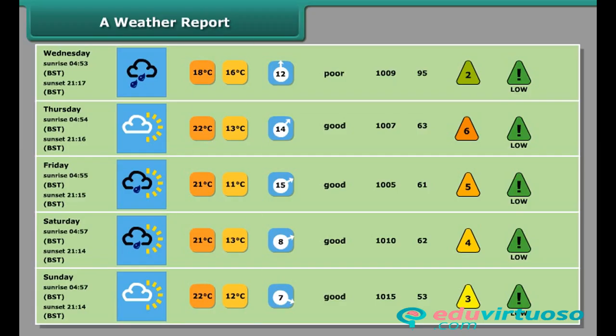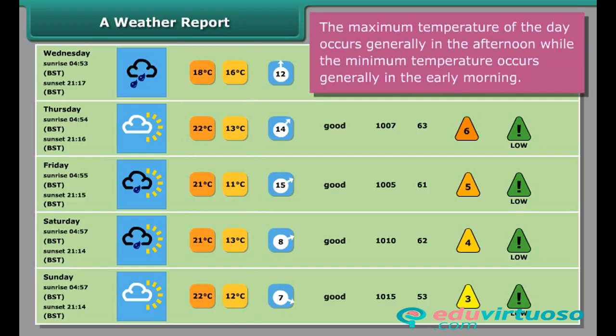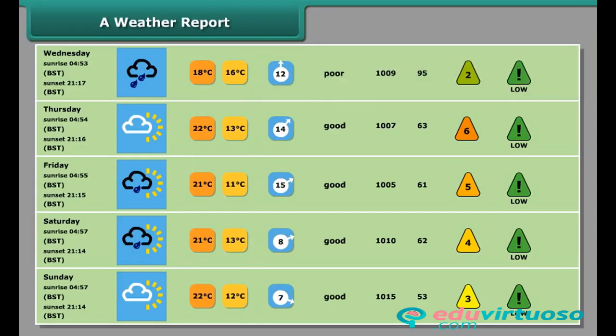In the third row, the minimum and maximum temperatures of the day are shown. These minimum and maximum temperatures are recorded by special thermometers called maximum and minimum thermometers.